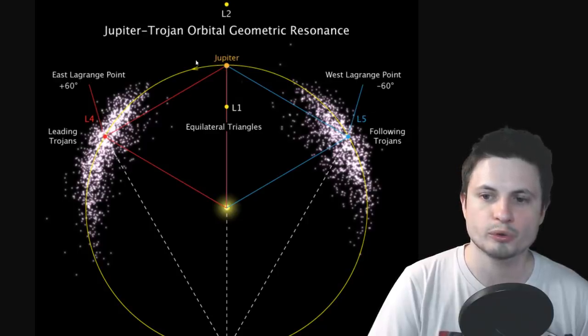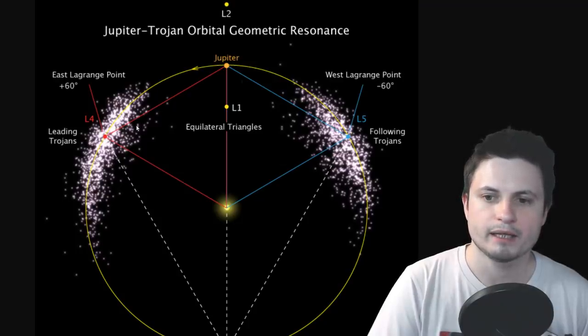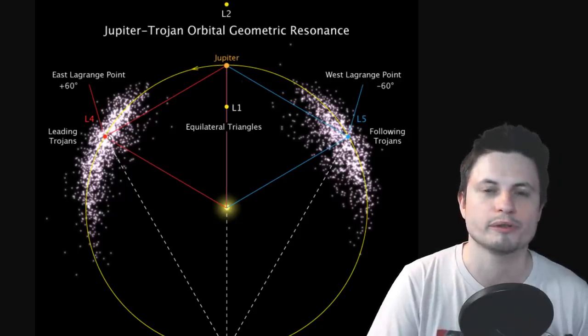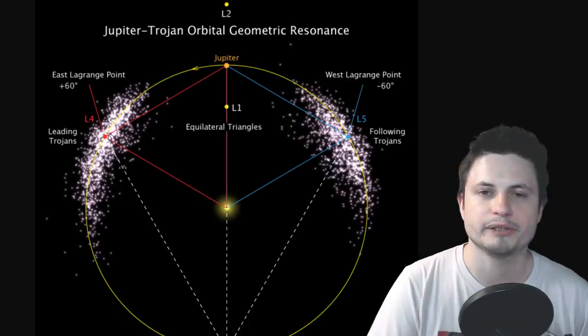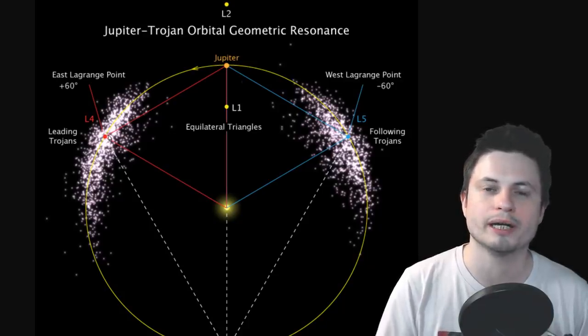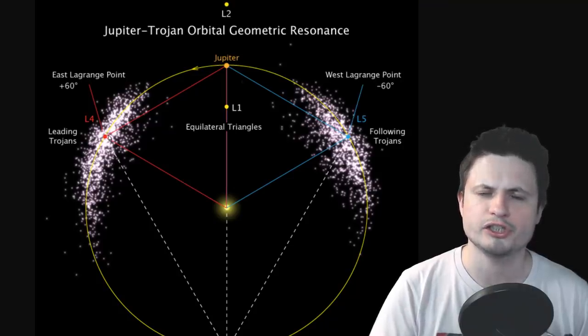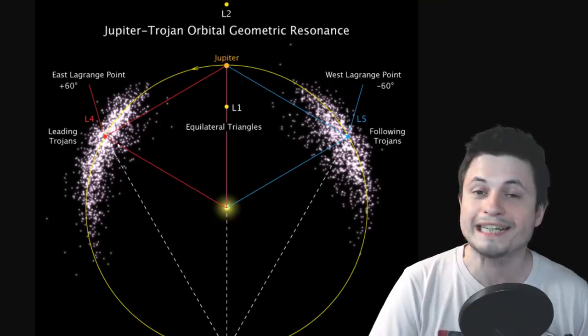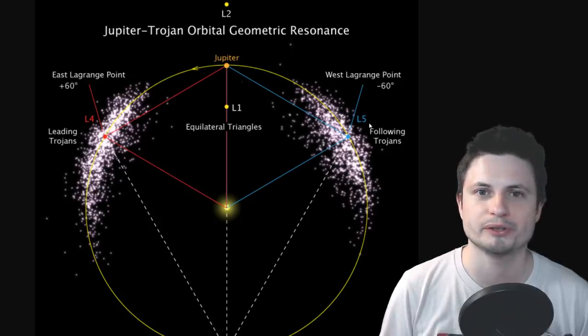This is known as the leading Trojans, and this is known as the following Trojans. And Jupiter has a lot of these asteroids that it was able to capture over the 4.5 billion years in these particular points. There's about 7200 of them that we've discovered so far. And it just so happens that for some unusual reason, there is about 40 to 100% more of them here in front of Jupiter than there is behind. And this is where the mystery sort of begins.